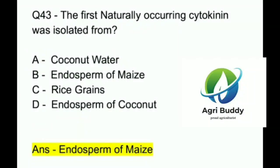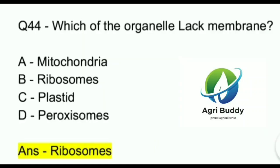Question 43. The first naturally occurring cytokinin was isolated from? A. Coconut water. B. Endosperm of maize. C. Rice grains. D. Endosperm of coconut. And the answer is Endosperm of maize.